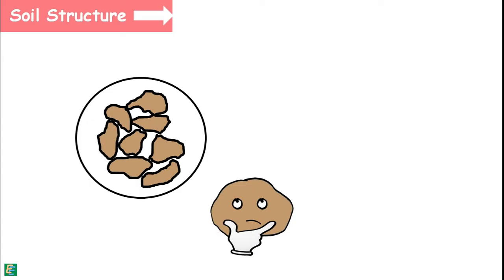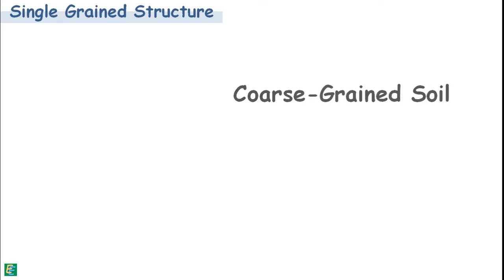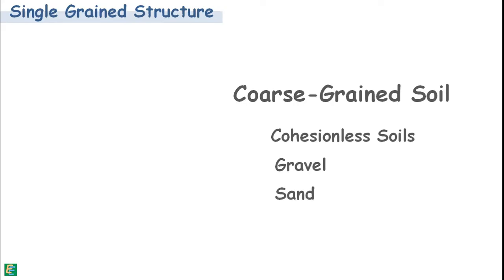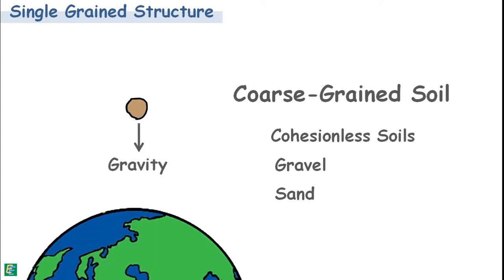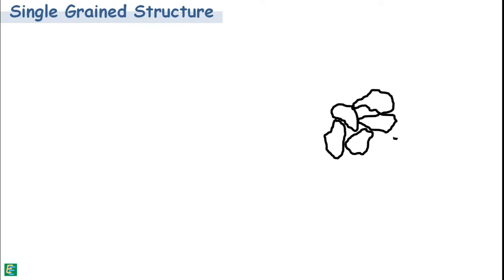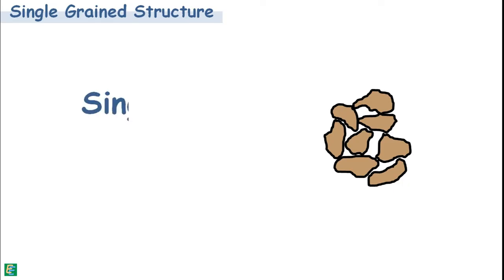Single-grain structure: This kind of structure is found in coarse-grained soils. Grains which are cohesionless and make up soils like gravel and sand form this kind of structure. These grains are large enough that gravity is the dominant force acting on them. When these particles get deposited, they acquire an equilibrium position by each particle being in contact with other surrounding particles. The soil structure so formed is called single-grained structure.